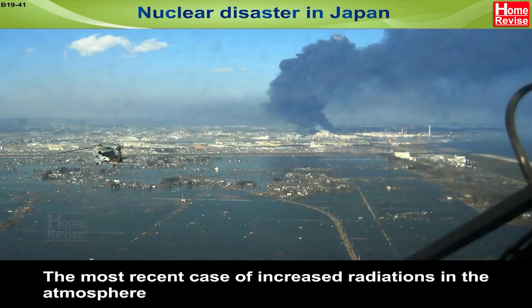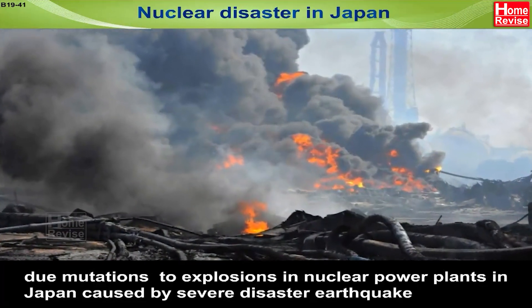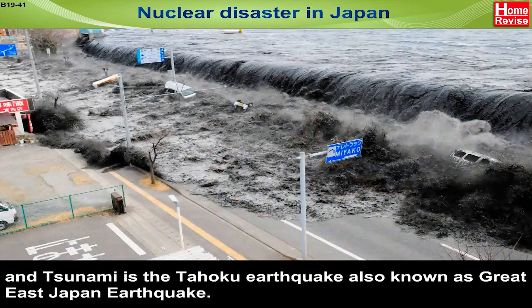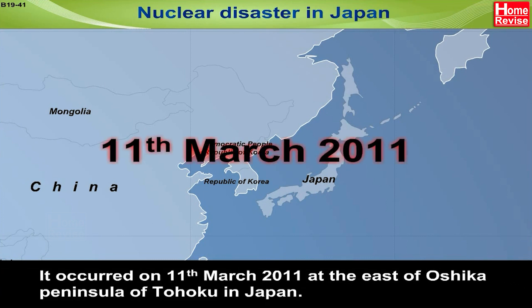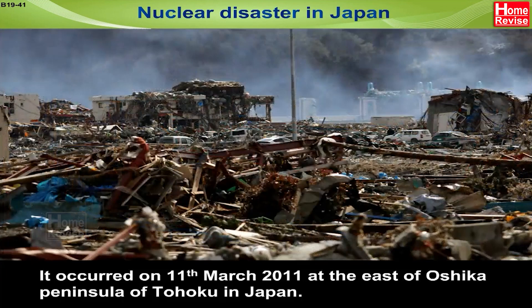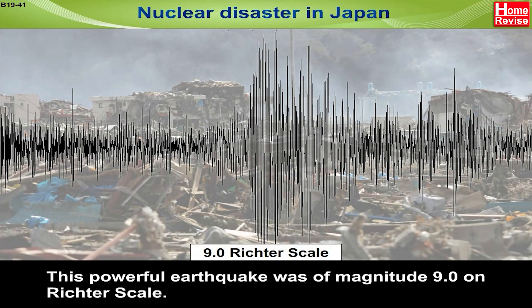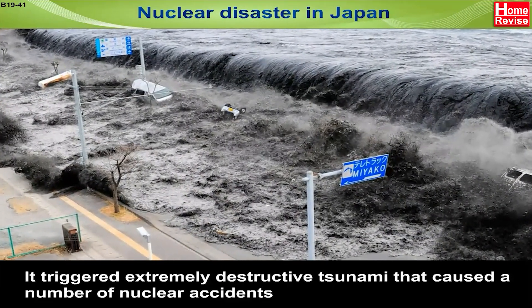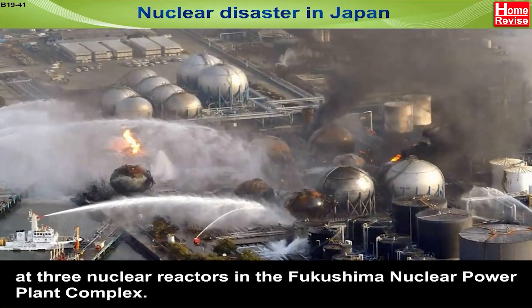Nuclear disaster in Japan — the most recent case of increased radiation in the atmosphere due to explosions in nuclear power plants in Japan was caused by the severe earthquake and tsunami known as the Tohoku earthquake, also called the Great East Japan Earthquake. It occurred on 11 March 2011 off the east of Oshika Peninsula of Tohoku, Japan. This powerful earthquake of magnitude 9.0 on the Richter scale triggered an extremely destructive tsunami, causing nuclear accidents at three nuclear reactors in the Fukushima nuclear power plant complex.